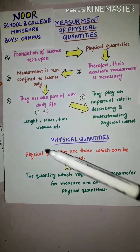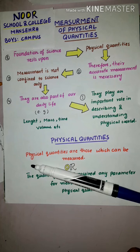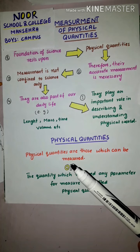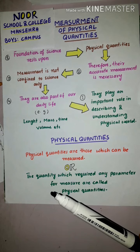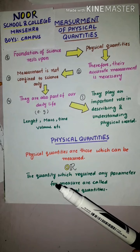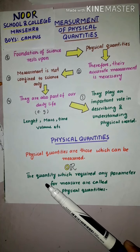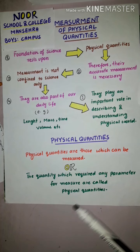For example, I have this marker. Can I measure it? Yes, we can measure it. We can find its length and its width. Every thing which you can measure — which you can see, which you can touch — those are called physical quantities.